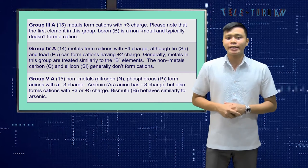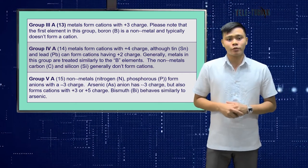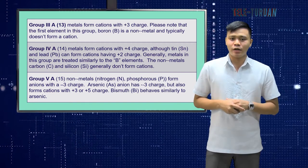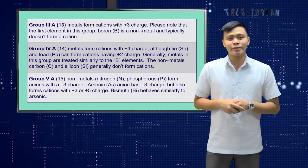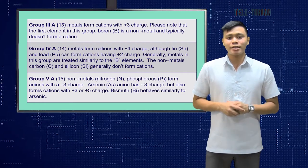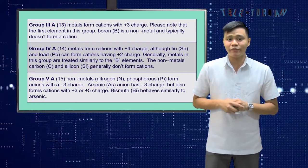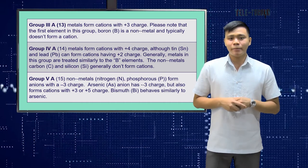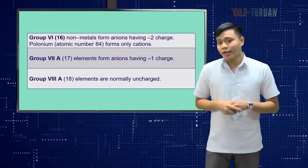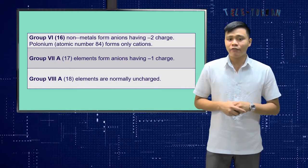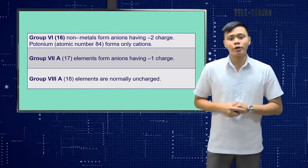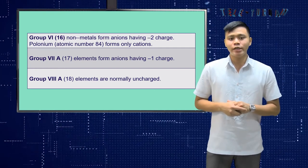Group 5A non-metals — nitrogen and phosphorus — form anions with a −3 charge. Arsenic anion has a −3 charge but also forms cations with +3 or +5 charge. This element behaves similarly to arsenic. Group 6A non-metals form anions having a −2 charge. Polonium, which has an atomic number of 84, forms only cations.